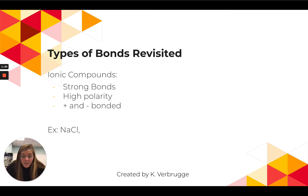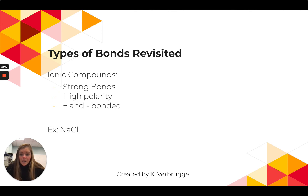An example of an ionic bond is NaCl. Notice that Na is a metal and Cl is a non-metal, which hopefully you picked up in your activity — an ionic bond is always between a metal and a non-metal.